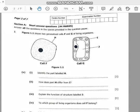Then the first question, Roman 1: identify the part labeled H. The part labeled H, this part is the cell membrane.